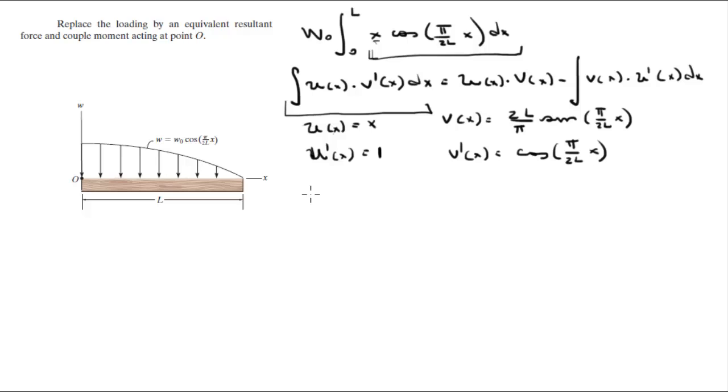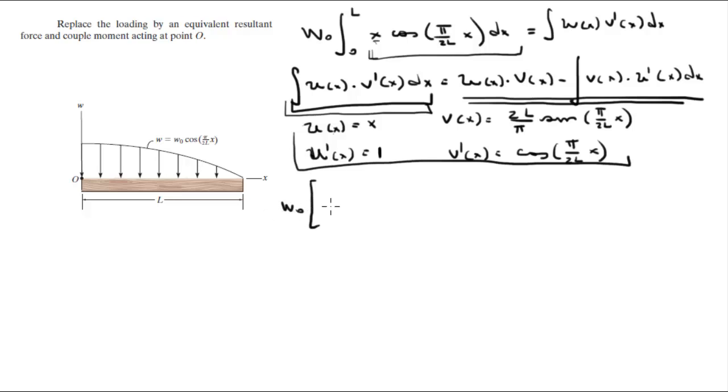So that's gonna become that. So this is equal to the integral of U of X V prime of X dx, which is this, and therefore this is true. So now we're gonna replace everything that's here with the information in these four equations I just wrote. And you're gonna get W naught, X, 2L over pi, sine of pi over 2L X. That's this first section right here. Now we're gonna do the second section, the integral of 2L over pi sine of pi over 2L X times 1, which is u prime, dx. And all of this is from 0 to L.